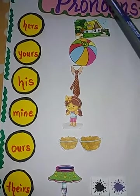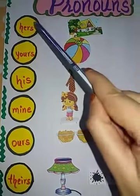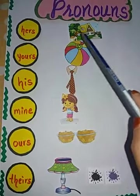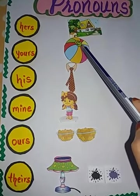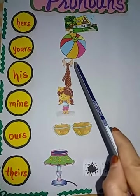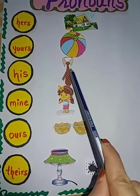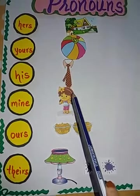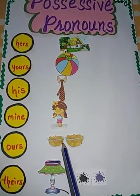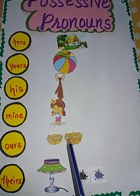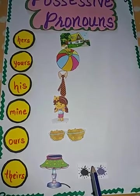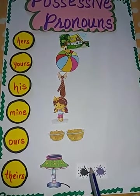Let us see one more time. This house is hers. I saw a new ball — is it yours? This tie is new, it is his. I met a friend of mine. These shapes belong to us, they are ours. The table lamp is mine, but these colors are theirs.